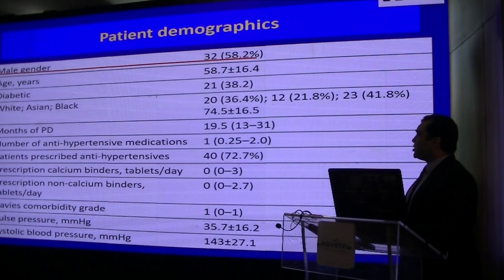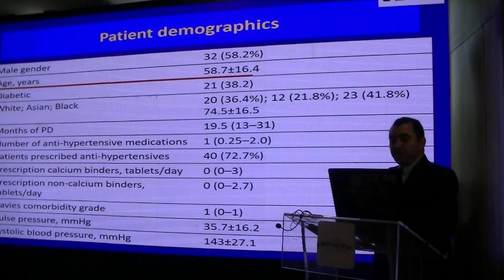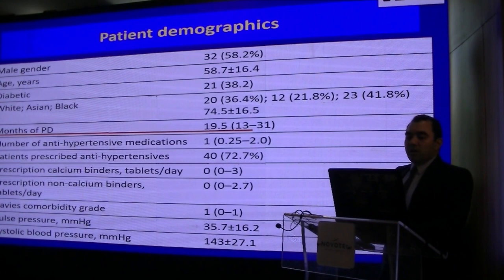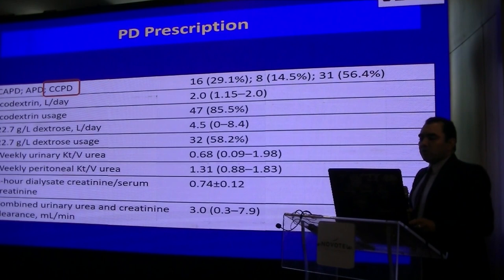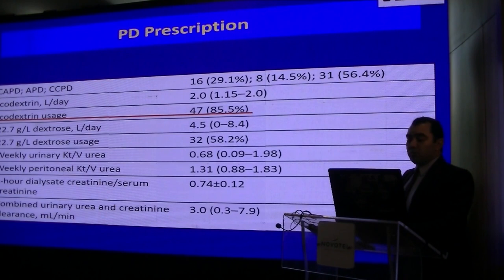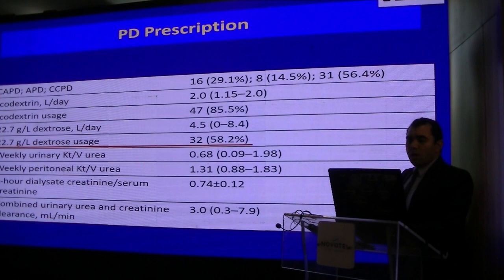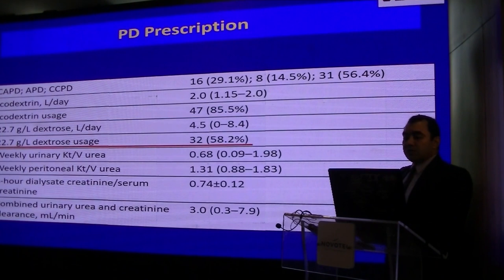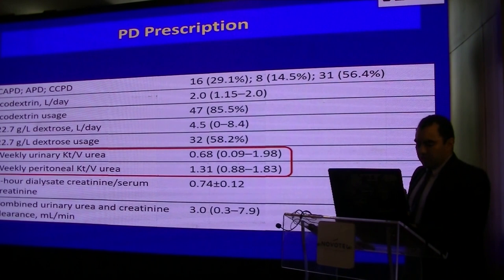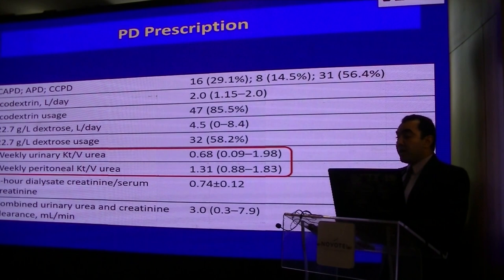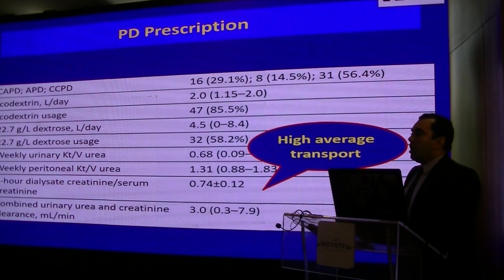Regarding our results: marginally more than half of patients were males, with average age of 58 years. About 38% were diabetics, and patients were on peritoneal dialysis for an average of 19 months. Most patients were on CCPD, and in 85% of patients icodextrin was used. Dextrose-based solutions were used in just above 50% of patients. Our cohort achieved the target KT/V above 1.7; both weekly urea KT/V achieved approximately 1.9. Our cohort were high-average transporters.